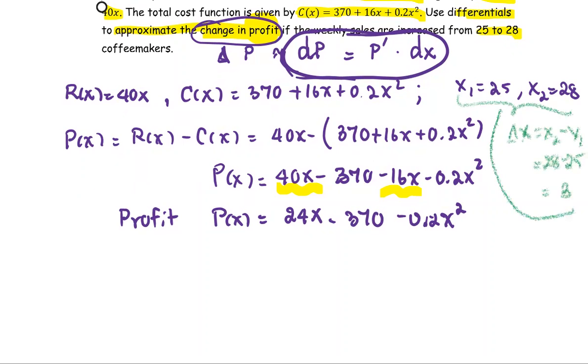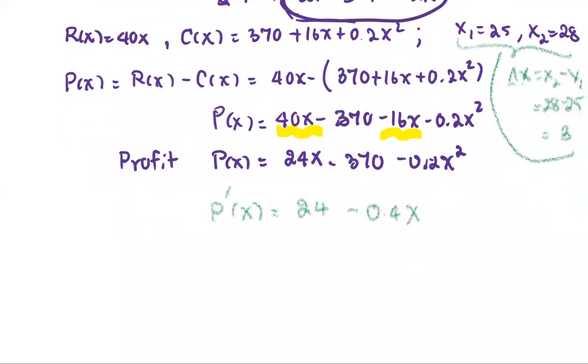Next, for P prime, the derivative of the profit is 24 minus 0.4 times x. And we're going to use these two pieces to find the differential of P. I'm going to put a note here, this is the differential of the profit.